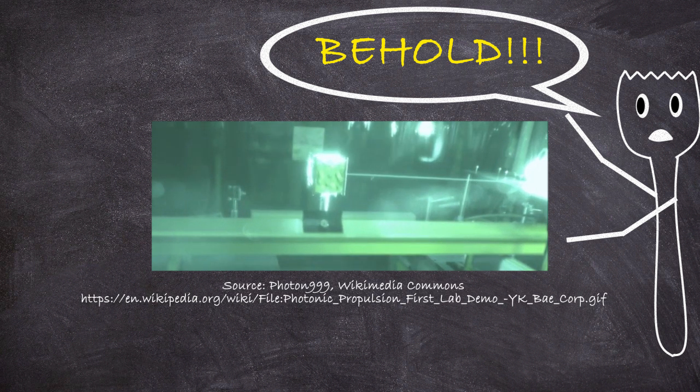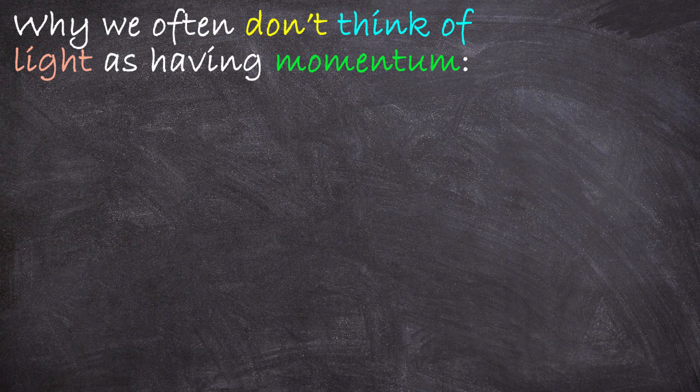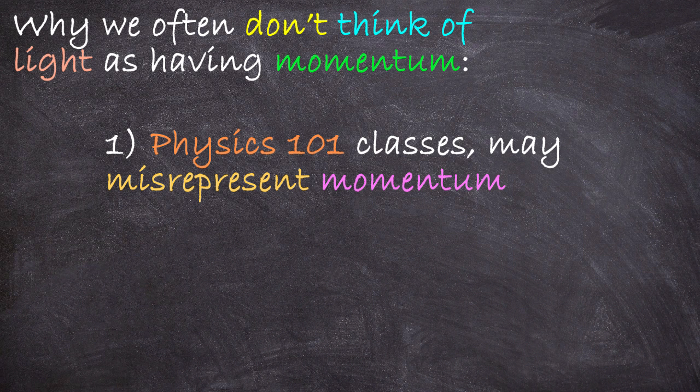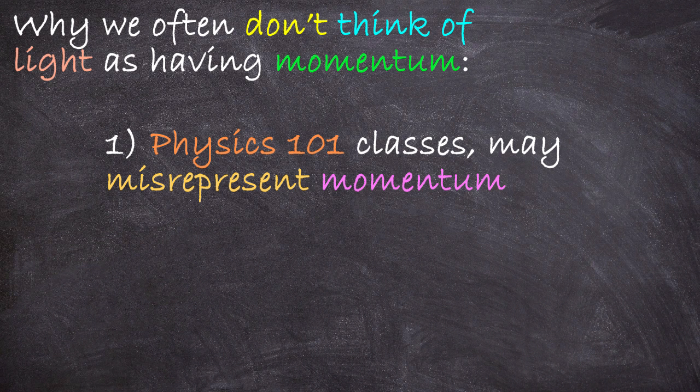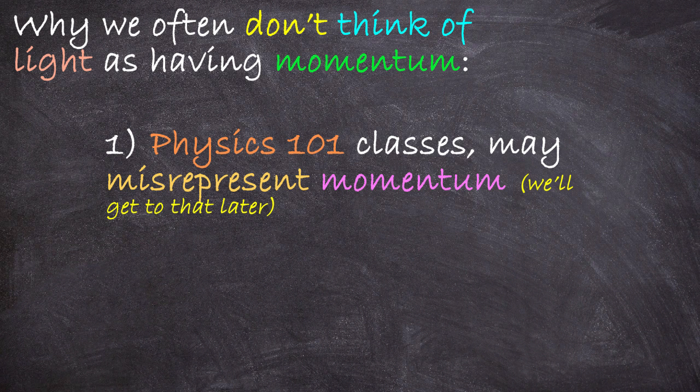Now, the fact that light exerts a force on things is something that isn't always realized. Part of the reason for this is because in a first exposure to physics, you know in a high school physics class or whatever, the way that momentum is presented makes it seem like it should be impossible for light to have any. Well, later in this video, we'll actually talk about that specifically, and why an introductory physics class may have misled you there.